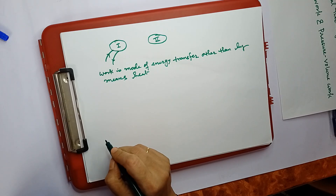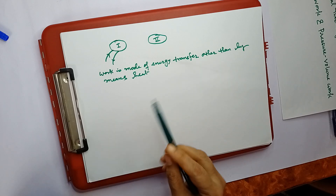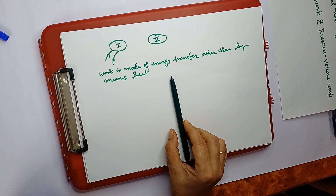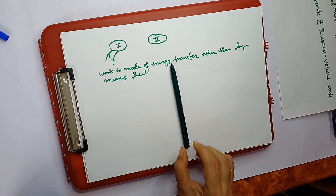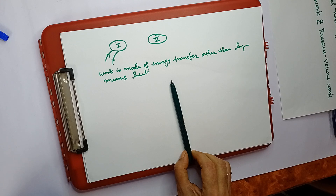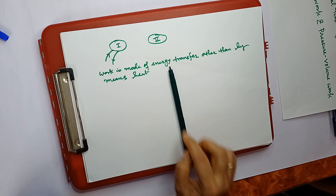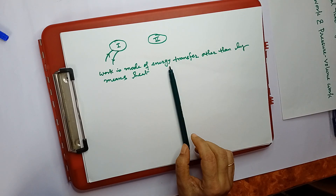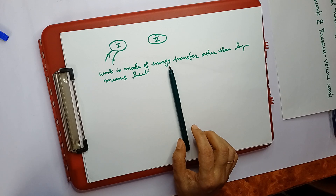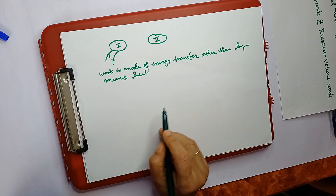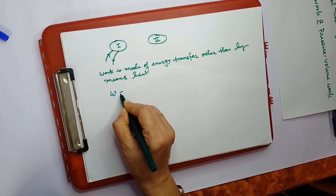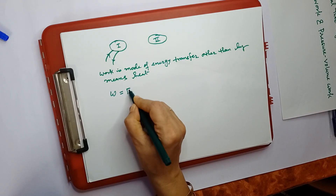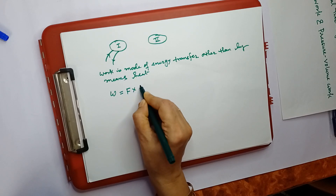Now, coming to the definition of work. This pan is here. I am applying muscular force to this pan — I am putting some effort to this pan and the pan is displaced. Then work is done by me. So work is said to be done, and we can write it as applied force into displacement.